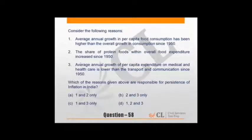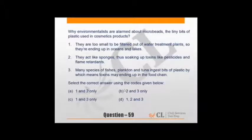Average annual growth in per capita food consumption has been higher than overall growth - the data is given. Average annual growth of per capita expenditure on food has been rather lower than overall growth since 1950. Of course, this is about average annual growth versus overall growth. Highly likely overall growth will be more, and that is correct. Share of protein foods with overall food expenditure increase - yes. Average annual growth of per capita expenditure on medical and health care is lower than transport and communication - again correct. The average is given: around 3.3-3.6% for health and medical, 5.5% for transport and communication.